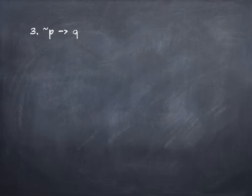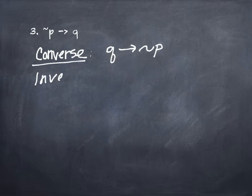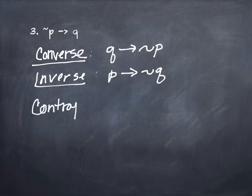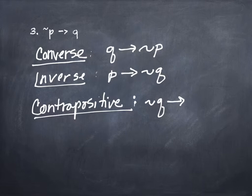Now let's look at what the symbols look like for converse, inverse, and contrapositive for a general statement. Suppose the original statement is tilde P arrow Q. The converse switches the order: Q arrow tilde P. The inverse negates both parts — negating tilde P gives P, negating Q gives tilde Q — so: P arrow tilde Q. The contrapositive both switches the order and negates: the Q part comes first as tilde Q, and tilde P negated is P, giving tilde Q arrow P.